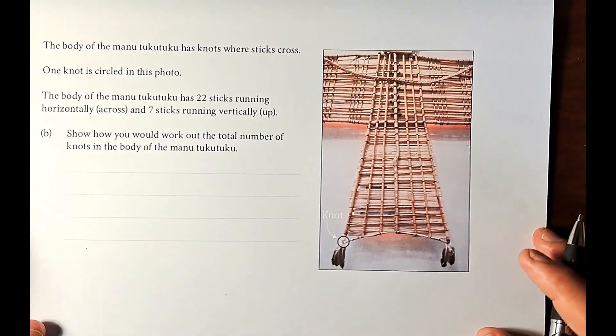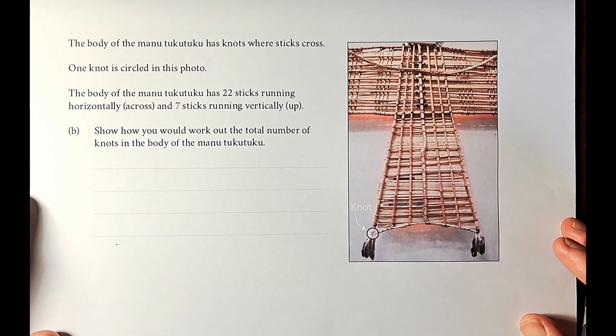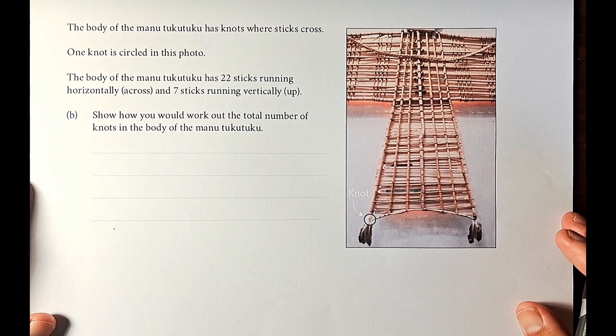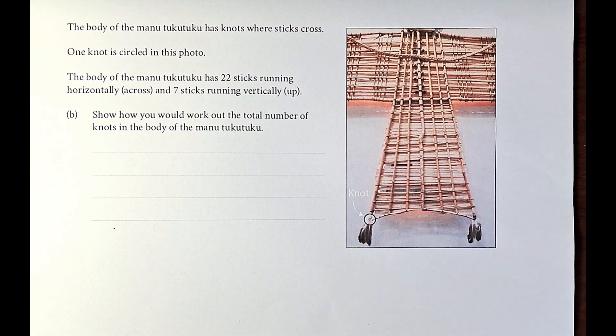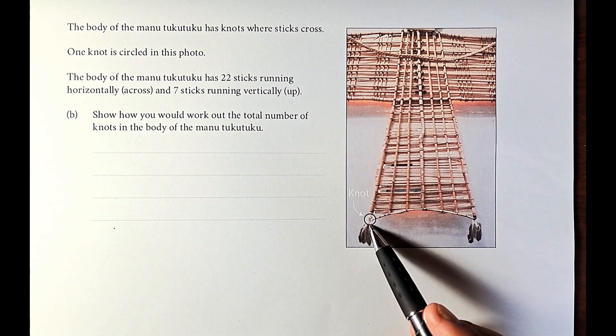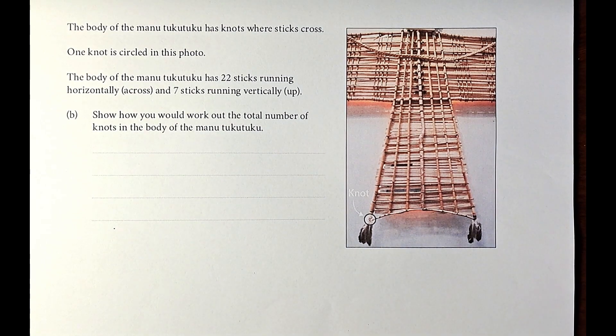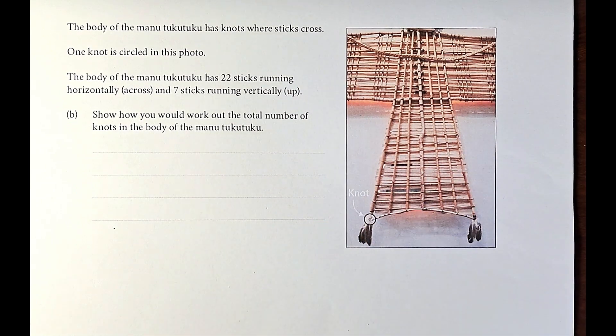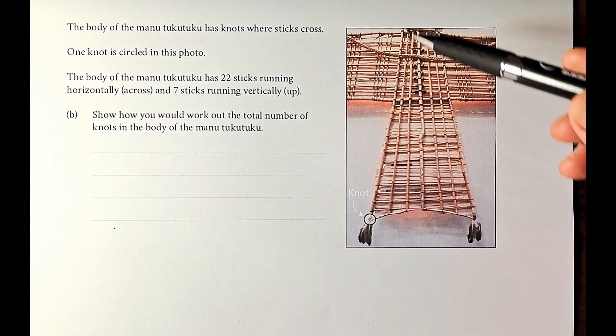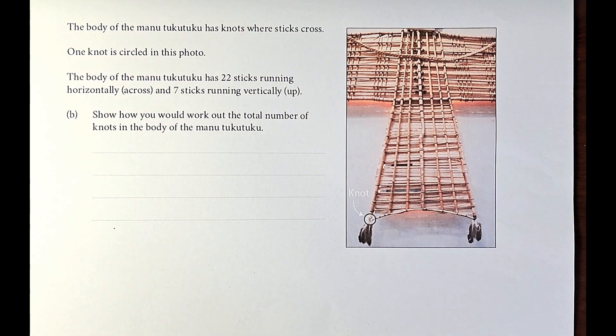Part 2 looks like that. Let's read the question. The body of the Manu Tuku Tuku has knots with sticks crossing. One knot is circled in the photo. The body of the Manu Tuku Tuku has 22 sticks running horizontally and 7 sticks running vertically.